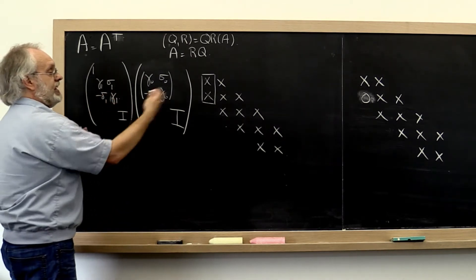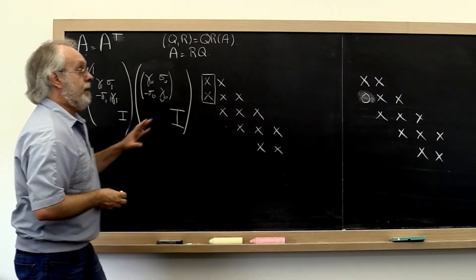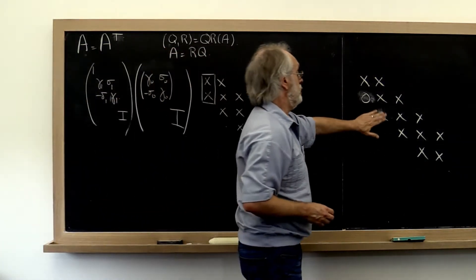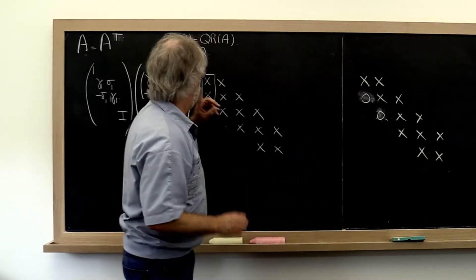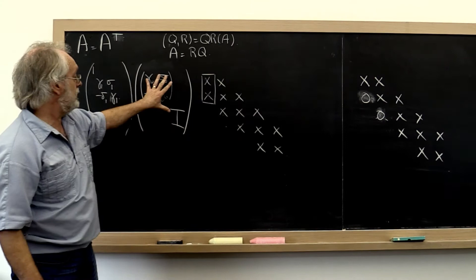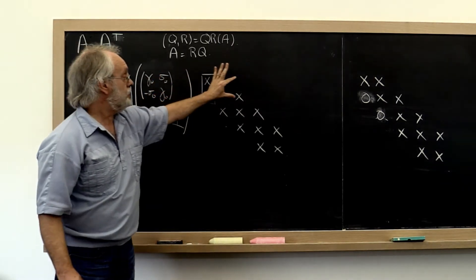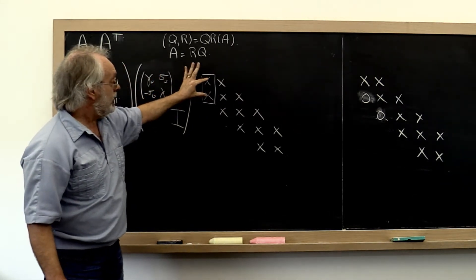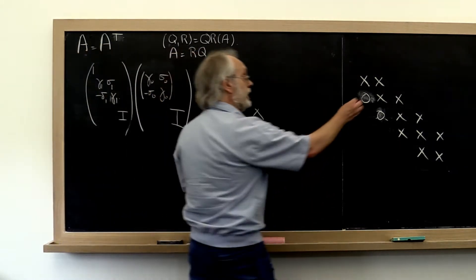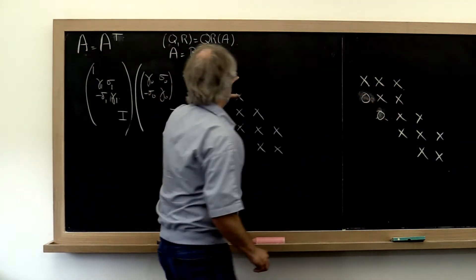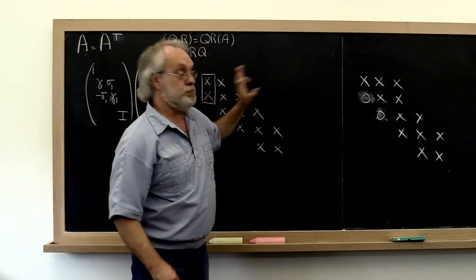And when we apply that to the matrix, then we introduce a zero right there. One thing we forgot to notice is that when we apply this to this matrix right here, we apply it to this pair and then to this pair and then to this pair. So actually we introduced a nonzero here, but no nonzeros beyond that point.